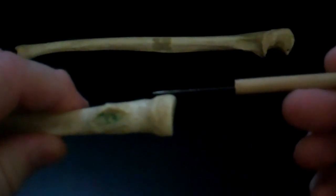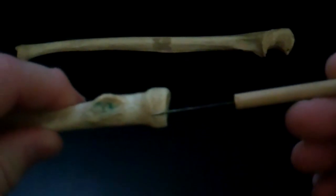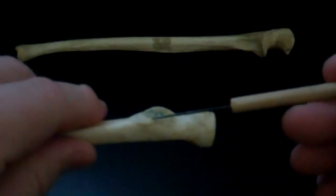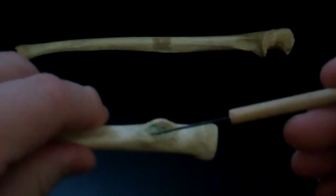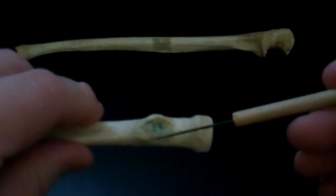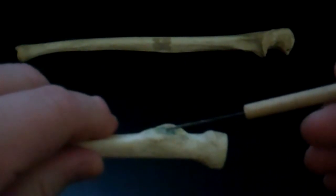This round top is the head of the radius. This protrusion here is called the radial tuberosity, also known as the biceps tuberosity. This is where your biceps muscle tendon attaches.